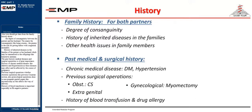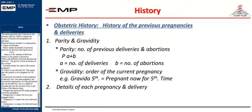You should also get data from the family history about: the degree of consanguinity between the patient and her husband — the nearer the consanguinity, like being cousins, the greater is the risk for getting babies with congenital anomalies; history of inherited diseases in the families of the patient or her husband which may be transmitted to the offspring, like hemolytic anemias. The past history of medical diseases and surgical operations is of great importance, including history of chronic medical diseases like diabetes and hypertension, as these diseases may affect and be affected by the course of pregnancy.